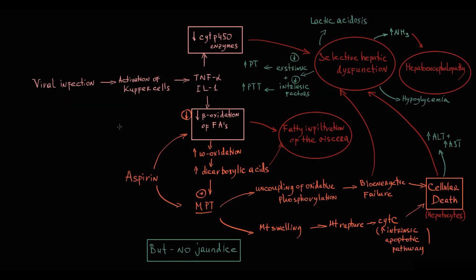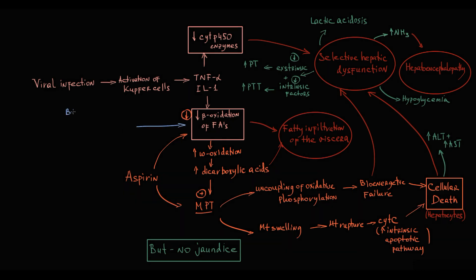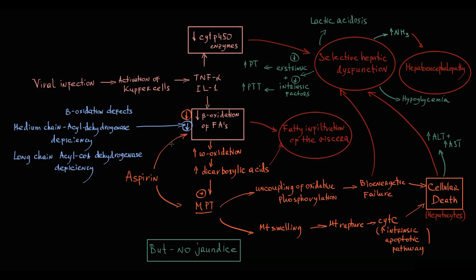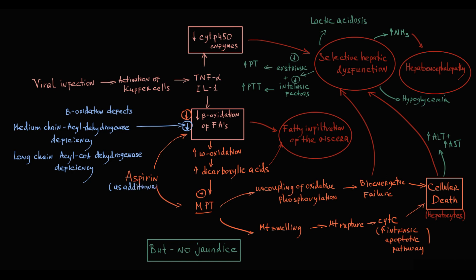If a child has pre-existing metabolic disorder, particularly primary or secondary beta-oxidation defects, inherited deficiency of medium-chain acyl dehydrogenase or long-chain acyl-CoA dehydrogenase deficiency, such disorders predispose mitochondria to any injury. In this case, even viral infection without aspirin intake will cause severe mitochondrial damage. Aspirin intake serves as additional factor that only exacerbates mitochondrial injury.